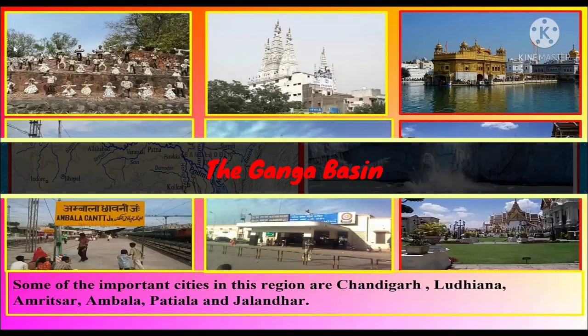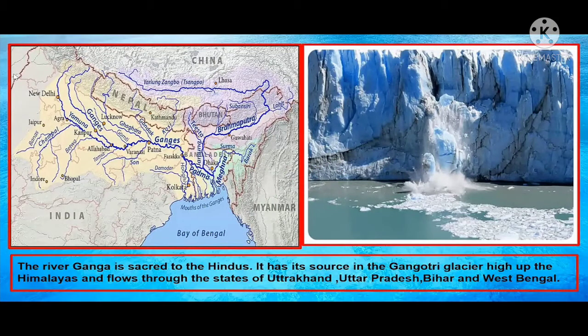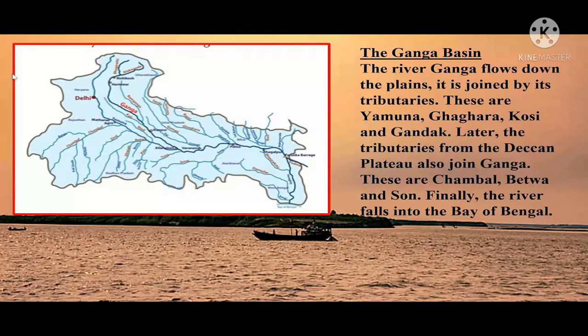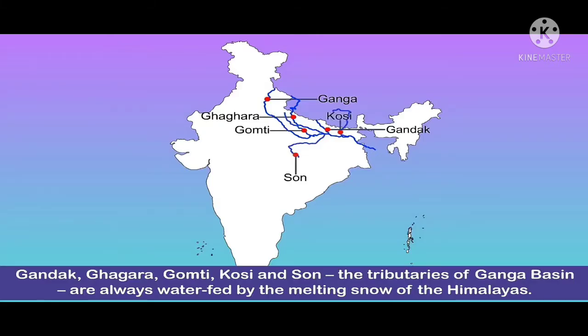Next comes the Ganga basin. The river Ganga is sacred to the Hindus. It has its source in the Gangotri glacier high up in the Himalayas and flows through the states of Uttarakhand, Uttar Pradesh, Bihar and West Bengal. The Ganga river flows down the plains and is joined by its tributaries: Yamuna, Ghagra, Kosi and Gandak. Later, tributaries from the Deccan plateau also join the Ganga river — these are Chambal, Betwa and Son.